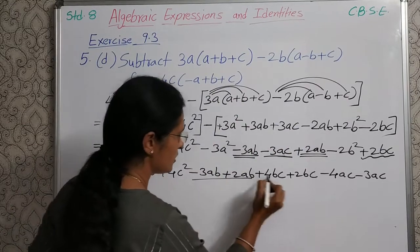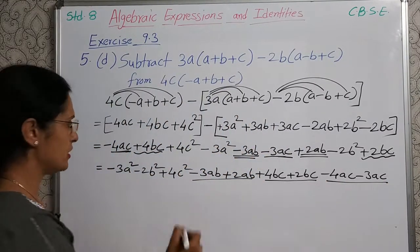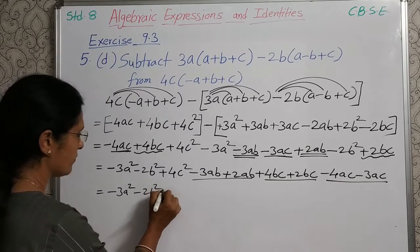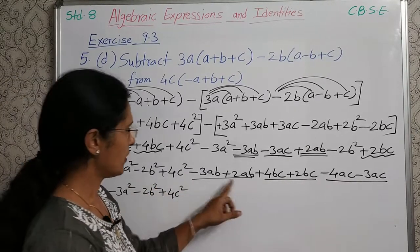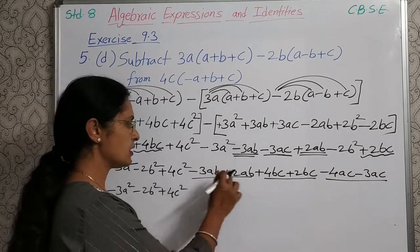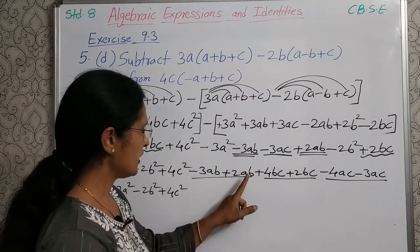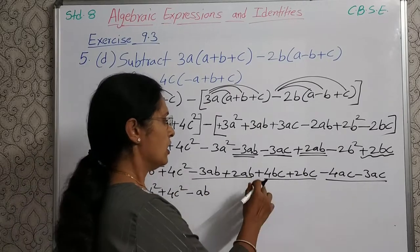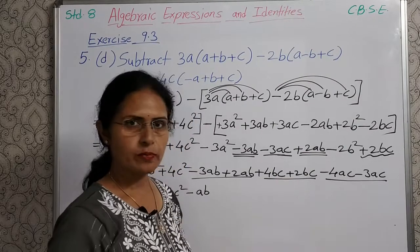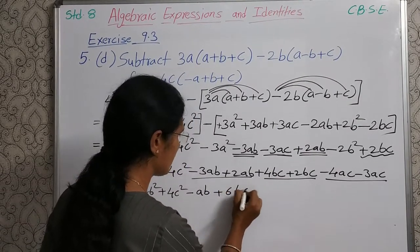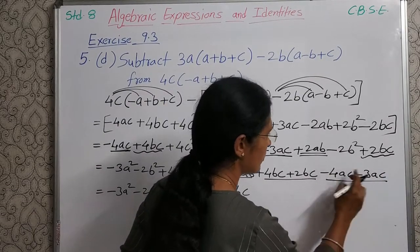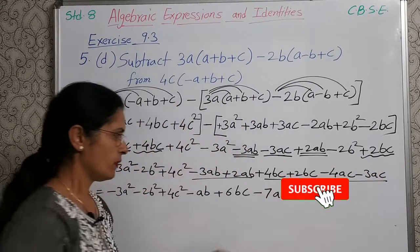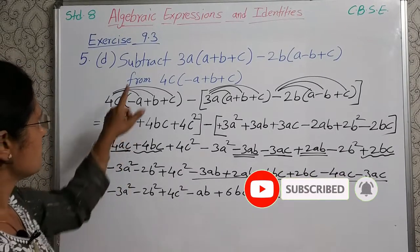Now solve. First, three terms as they are: minus 3A square, minus 2B square, plus 4C square. Now, minus 3AB plus 2AB — minus 3 plus 2 is minus 1 — so minus AB. Plus 4BC plus 2BC — plus 4 and plus 2 is plus 6BC. Last, minus 4AC and minus 3AC — minus 4 and minus 3 is minus 7AC. So the answer is: minus 3A square minus 2B square plus 4C square minus AB plus 6BC minus 7AC.